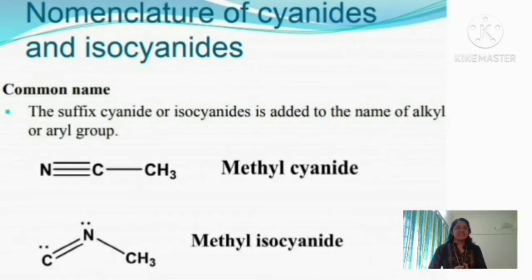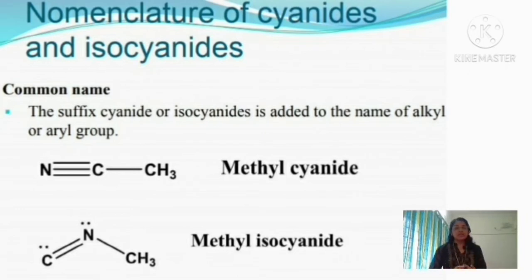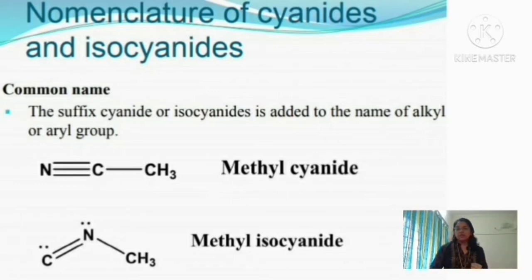Next we can discuss how to name cyanide and isocyanide compounds. There are two methods: by common name and by IUPAC name. In the common naming method, we first name the alkyl or aryl group attached to the cyanide or isocyanide, then follow it with the word cyanide or isocyanide as the suffix.